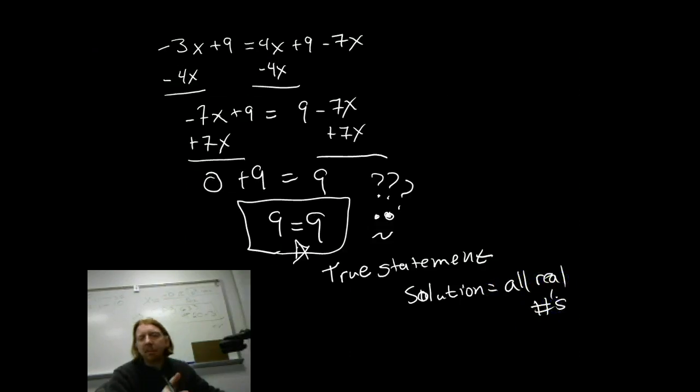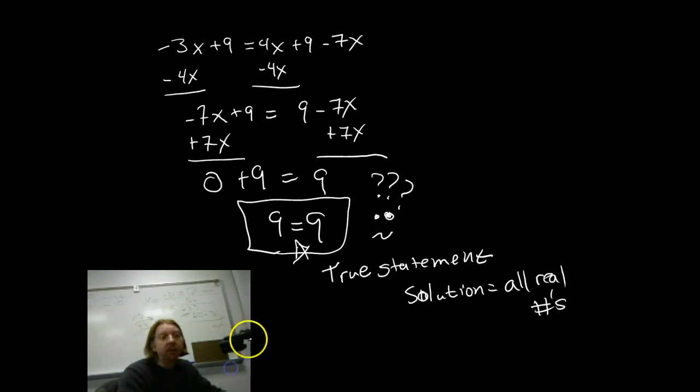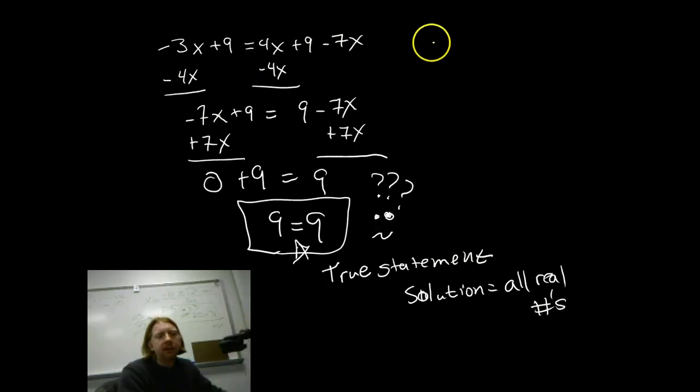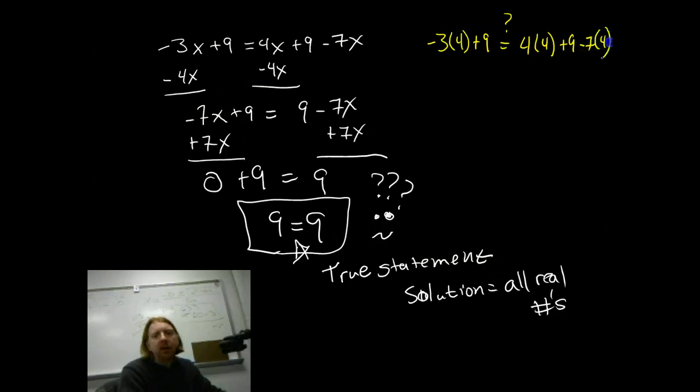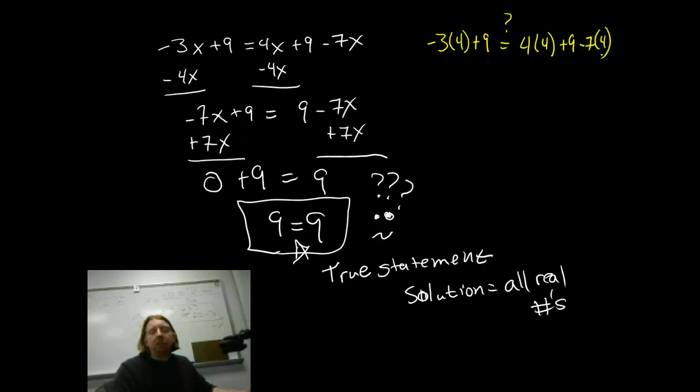That means any number I substitute for x is going to work in this problem. If you don't believe that, let's go ahead and just pick a number and try it. Let's take the number 4. So, negative 3 times 4 plus 9 is that equal to 4 times 4 plus 9 minus 7 times 4. Now, where did 4 come from? I just picked it as part of my check. I'm randomly trying a number out.